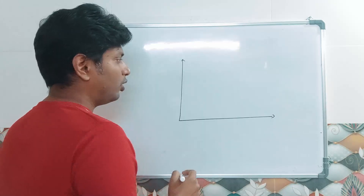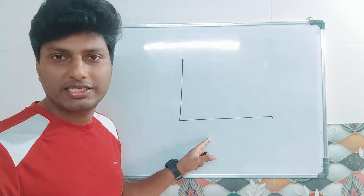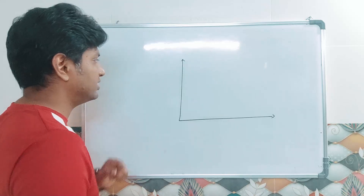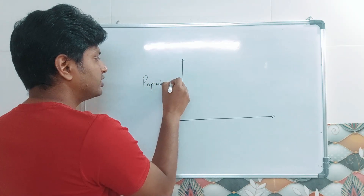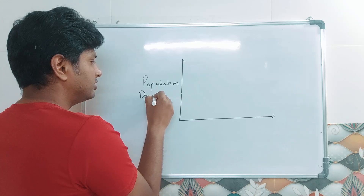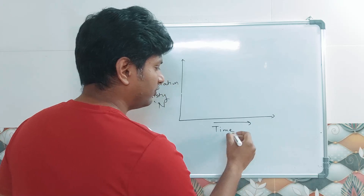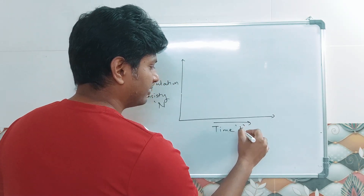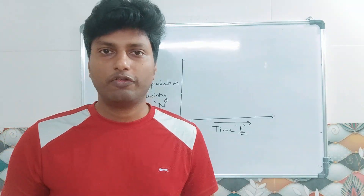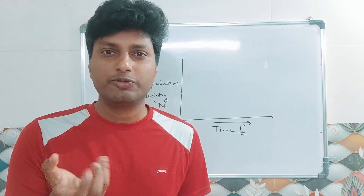This is Praful and I welcome you all to One Page Biology. Let us understand the concept of population density. I will draw a graph: on the y-axis I am writing population density, indicated by the symbol N, and on the x-axis I am writing time, indicated by T.